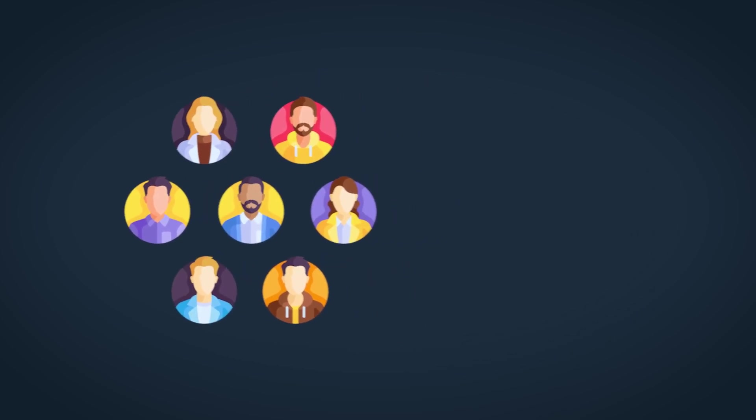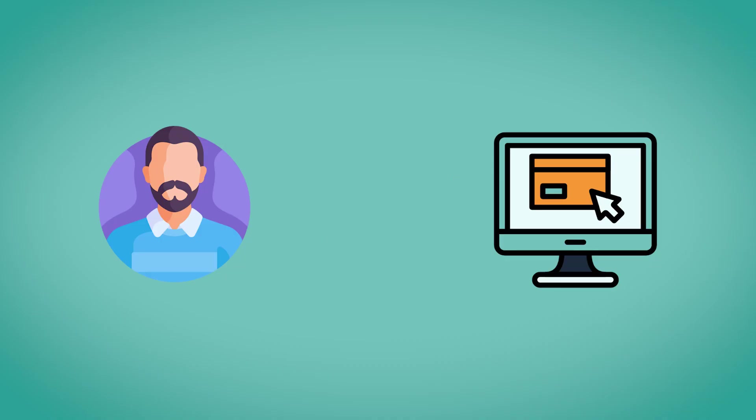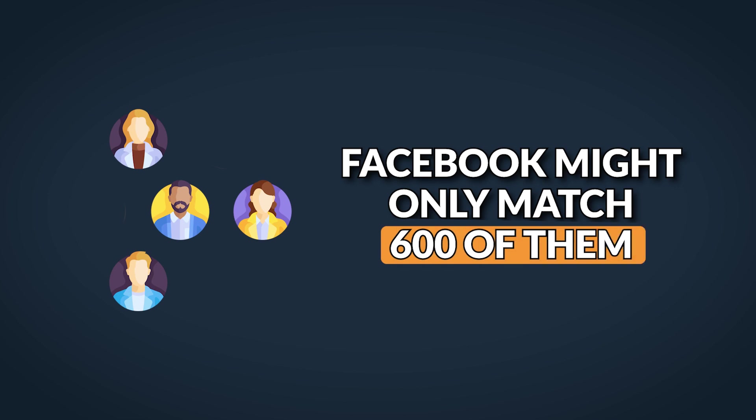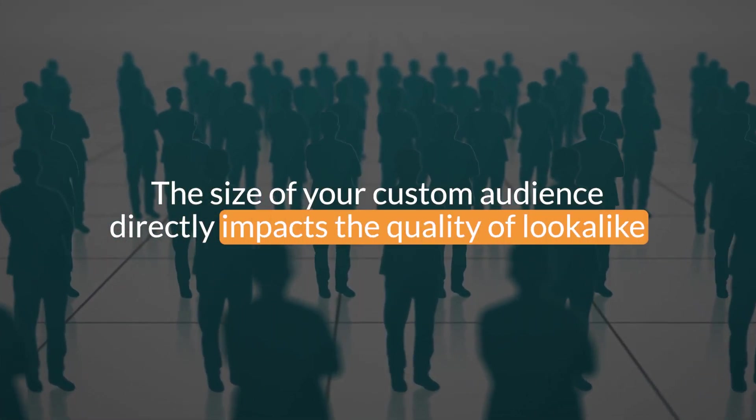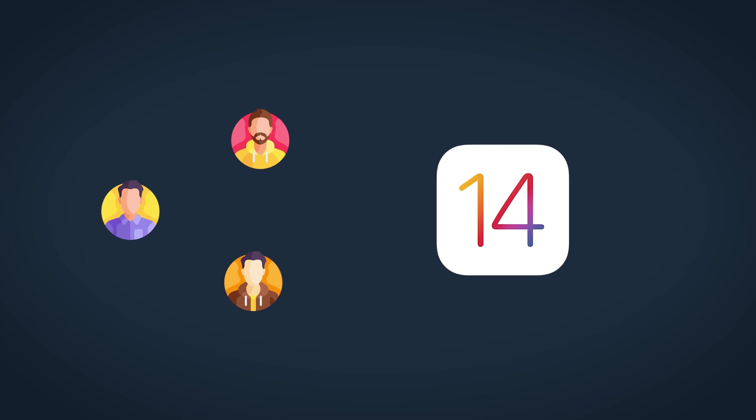The match rate is lower on customer lists and website custom audiences, meaning custom audiences are smaller than they used to be. In the past, if you uploaded 1,000 people in a customer list, maybe 90% — 900 people — would have been matched. Now you might upload that same 1,000 people and Facebook might only match 600, meaning you only have 600 people as a base for your lookalike. Since the size of your custom audience directly impacts quality, we're seeing smaller custom audiences as a result of iOS 14.5, producing lower quality lookalikes — but if you can provide large custom audiences, these still work very well.